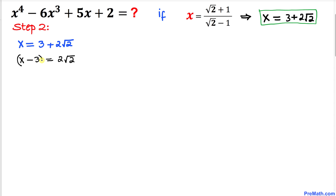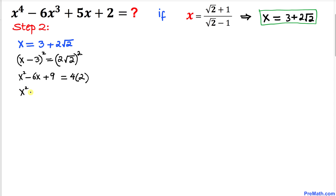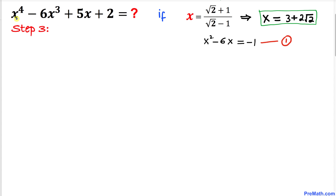Now let's square both sides. On the left-hand side we use the (a - b)² formula: x² - 6x + 9. On the right-hand side: 2² = 4, and square and square root undo each other giving ×2, so we get 8. Therefore x² - 6x + 9 = 8. Subtracting 9 from both sides gives x² - 6x = -1. Let's call this equation number 1.